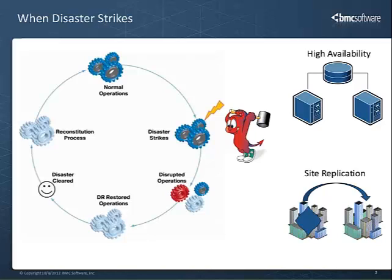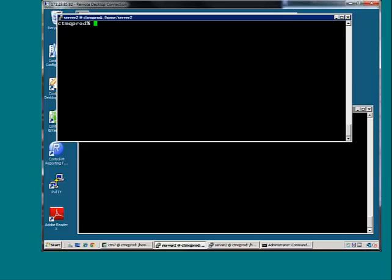For our hands-on today, we're going to look at a Postgres system running Control M Server 7, and we're going to turn on hot backup mode, which we're calling archive mode, and let you see how that works.